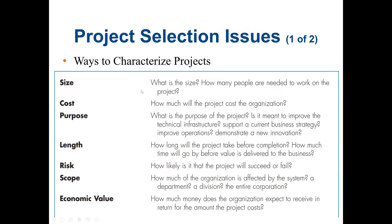There are seven different categories to characterize a project. The first is the size of the project, which is very important. How many people are needed to work on the project? This will lead us to the cost of the project — how much will it cost the organization. The bigger the project, of course, the higher the cost and also the longer the schedule.